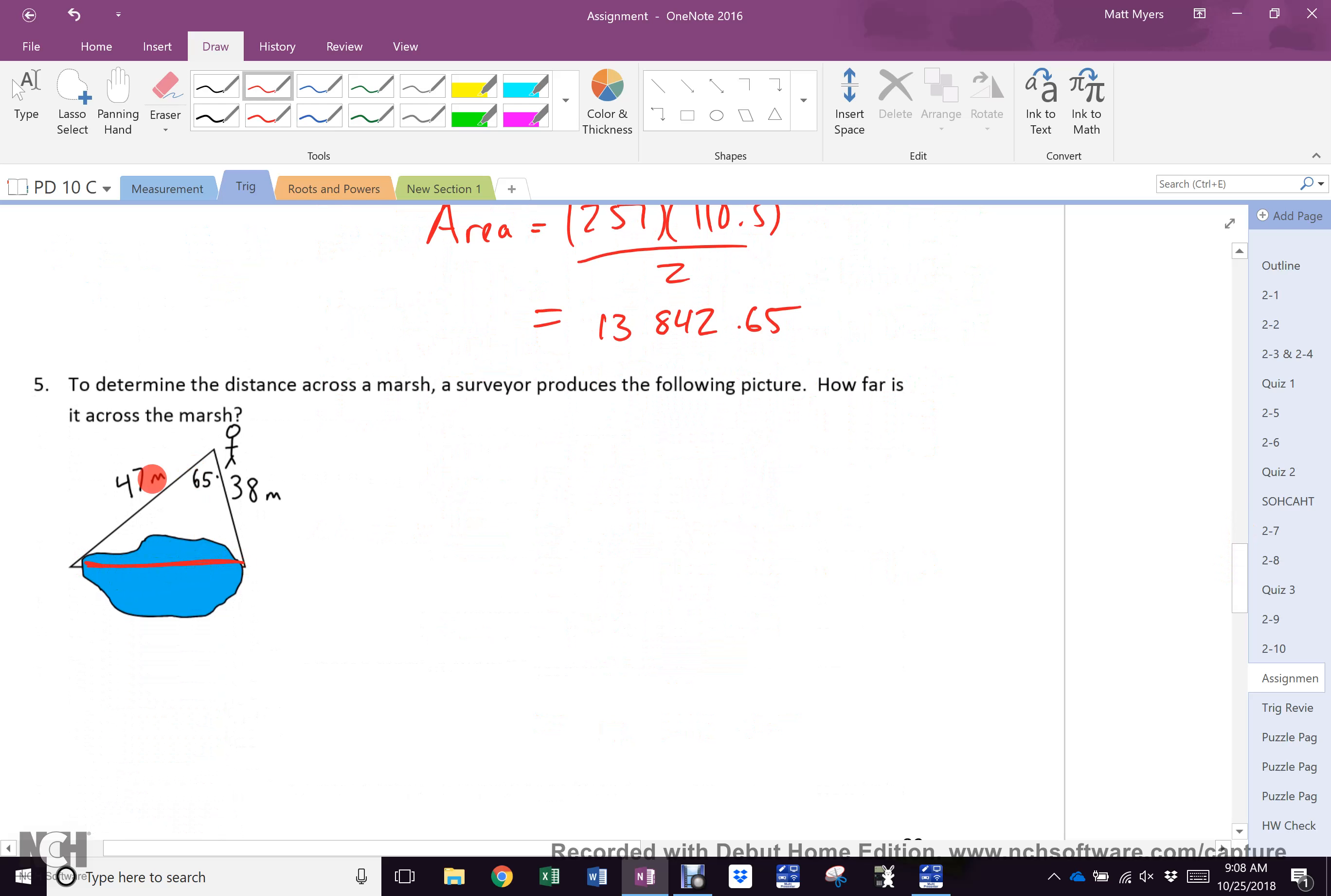This is across the marsh. So, this is side, angle, side. So, this is cosine law. This is what I need. So, it's c. c squared equals... I'm not going to do c squared. I'm going to do it all in one go. c equals the square root of 47 squared plus 38 squared minus 2 times 47 times 38 times cos 65, which equals 46.29.